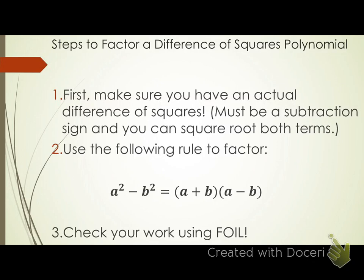After we first make sure that it is an actual difference of squares problem, step two: we can use the following rule to factor. a squared minus b squared equals a plus b times a minus b. The a values I get from taking the square root of a squared. So I take the square root of my first term, I get that a value. b comes from taking the square root of b squared. Make one a plus sign, one a minus sign, you've got your problem.